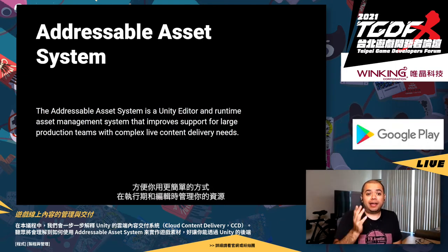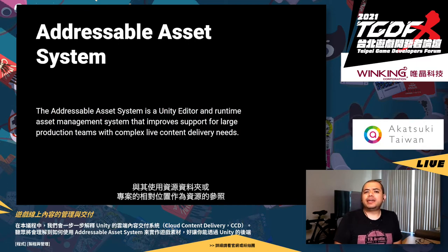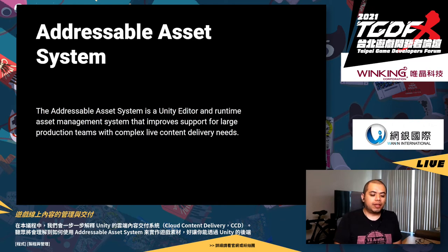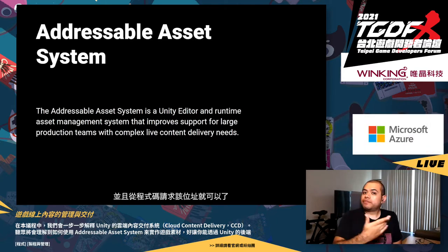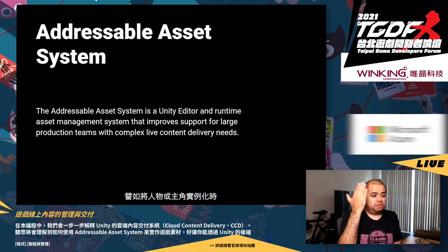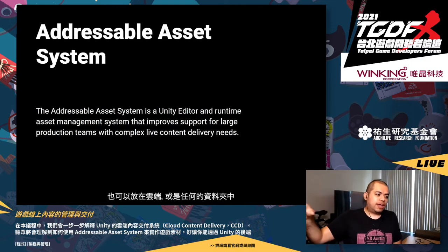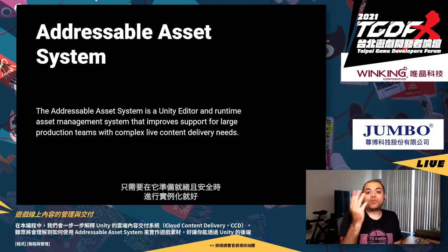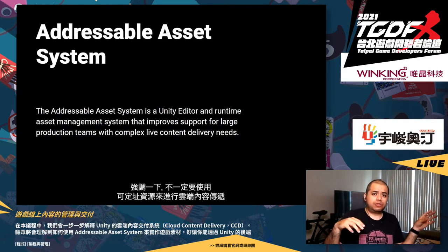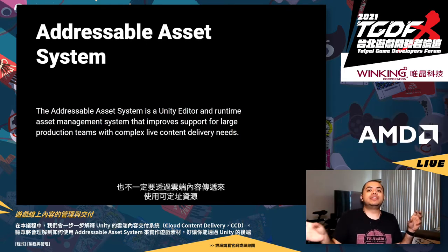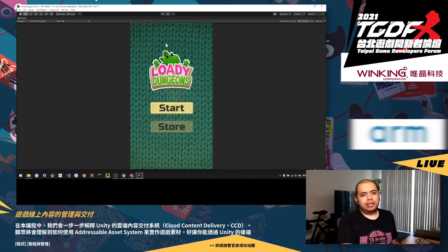Talking about the Addressable Asset System — this is a package from the Package Manager that lets you manage your assets both at runtime and at editing time in a simpler way. Instead of referencing an asset by its location relative to your assets folder, you assign an address and request it from your code. You say, 'instantiate the main player,' and the main player can be local, in the cloud, or on any folder — you don't care. You don't need to use addressables to use CCD and vice versa, but if you use both, you get the most out of both worlds.